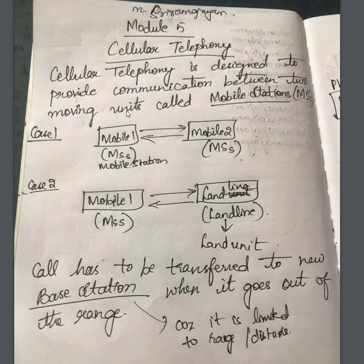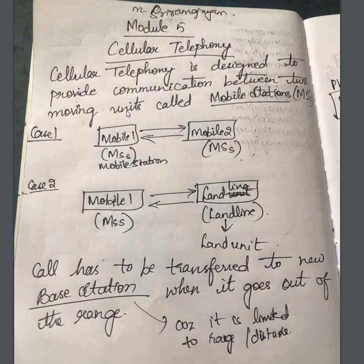Calls have to be transferred to a new base station when the mobile goes out of range. A mobile station works only within a particular range. Suppose a person is moving from one area to another — when the first mobile station goes out of range, the call must be transferred to the next mobile station immediately, without disturbing the communication.